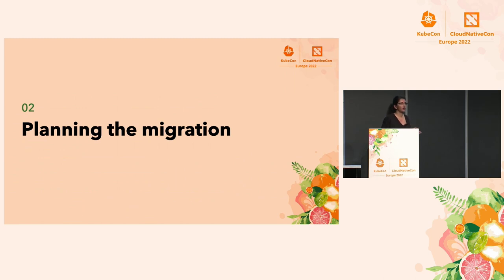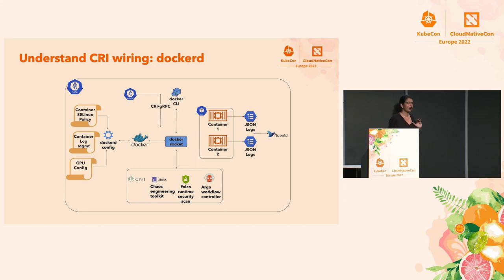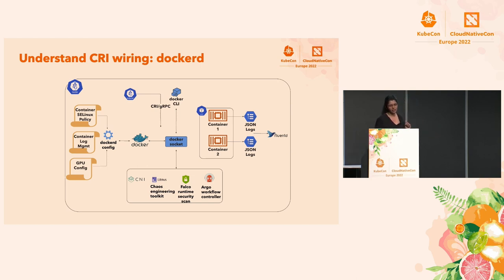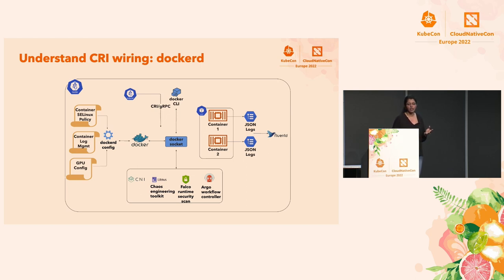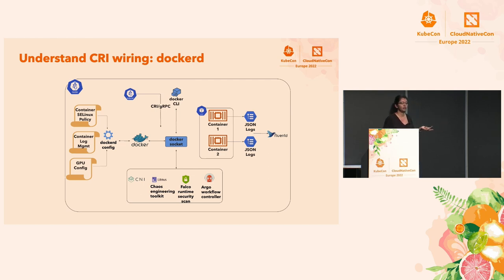How did we go about planning our migration? First, you need to understand the CRI wiring in your cluster. Look at your worker nodes and see how many places you have Docker daemon and Docker Shim sockets being exposed to all your cluster components. In our case, the Docker layer in the middle was exposing Docker Shim socket as well as Docker daemon socket. There was a box with all our add-ons that were actually relying on a CRI socket, namely the CNI, chaos engineering toolkits, the Falco add-on which we use for security scanning for our container runtime images, as well as Argo workflow controller.